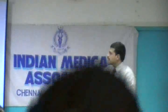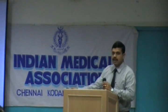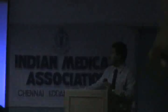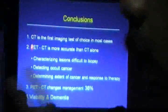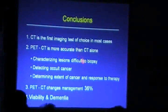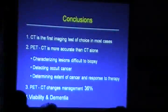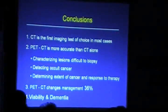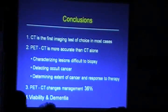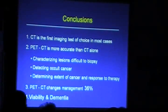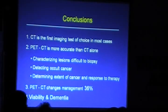CT is the first remaining test in most of the cases — that should be the algorithm. However, PET-CT is more accurate than CT alone, because characterizing a lesion that is difficult to biopsy is challenging. You have a lesion which is very difficult; you don't know where to biopsy from. The patient is having a lot of necrotic tissue and you don't know where to take the biopsy from.